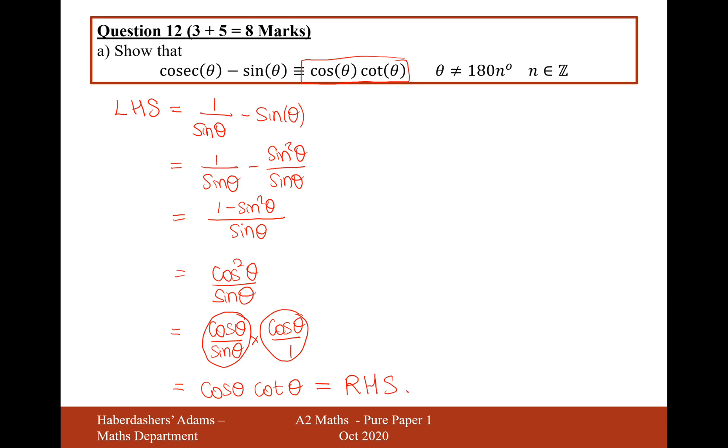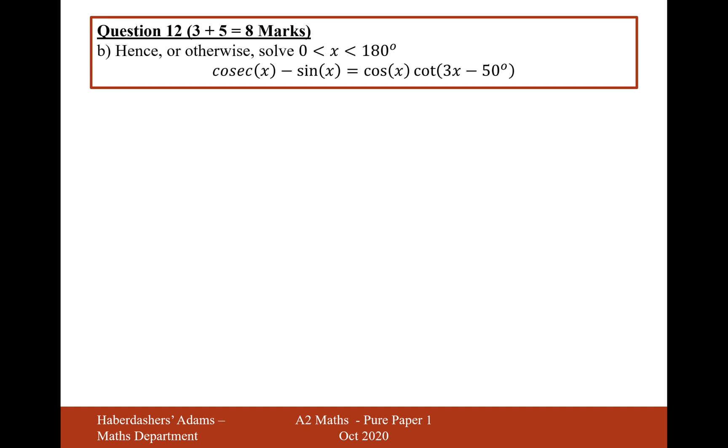So there we are, that's the answer for part A. I'll move on to the next bit, B. Hence or otherwise, solve in between 0 to 180 degrees, cosec x minus sine x equals cos x cot...